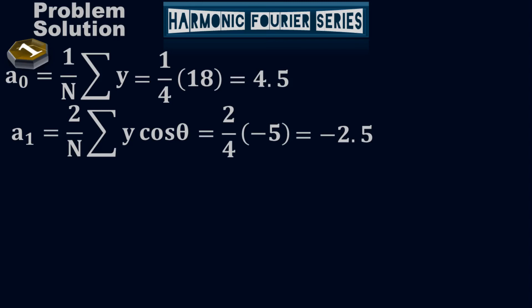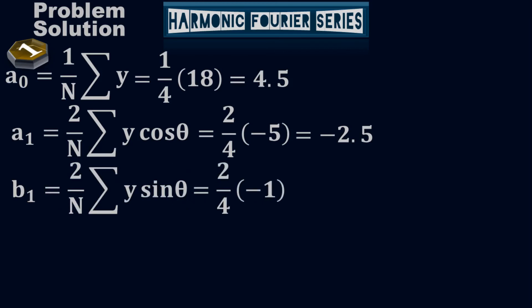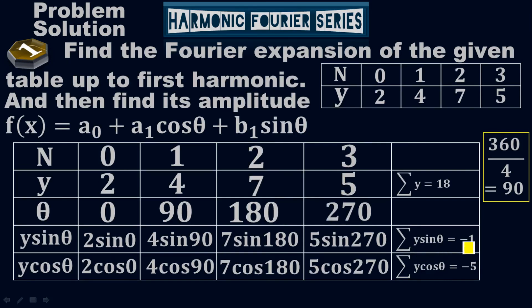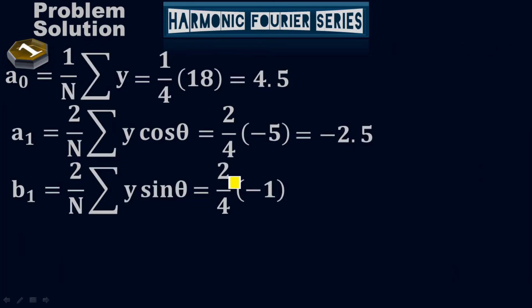To find B₁, the formula is (2/N)·Σ(Y·sinθ) = (2/4)·(−1). The summation of Y×sinθ equals −1 and N = 4, so B₁ = −0.5.